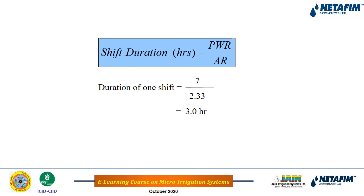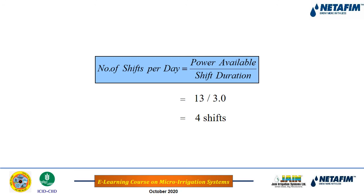Shift duration = peak water requirement ÷ application rate = 7 mm ÷ 2.33 mm/hr = 3 hours per shift. Number of shifts per day = available operating hours ÷ shift duration = 13 ÷ 3 ≈ 4 shifts per day.